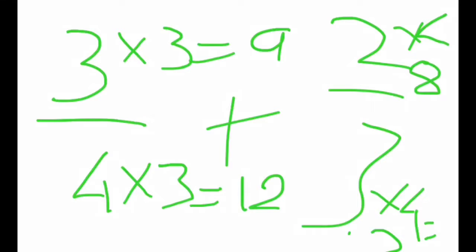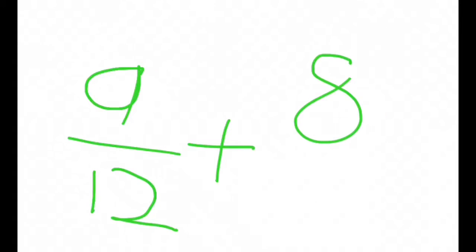Now remember, 9 twelfths and 8 twelfths. So now you're going to add them together. 9 twelfths plus 8 twelfths. Now you can add 9 plus 8, that equals 17, and the denominator will equal 12.